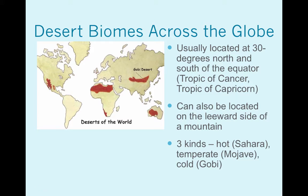Desert biomes. As was mentioned in the first part of the biomes video, where the Ferrel and the Hadley cells come into contact is usually where you find deserts. That's at 30 degrees above and 30 degrees below the equator — that's the Tropic of Cancer and the Tropic of Capricorn, just extra info. Deserts can also be located on the leeward side of a mountain — that's part of the rain shadow effect.